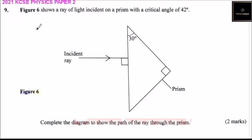Question number 9. Figure 6 shows a ray of light incident on a prism with a critical angle of 42 degrees. So we have the incident ray. This is a prism.